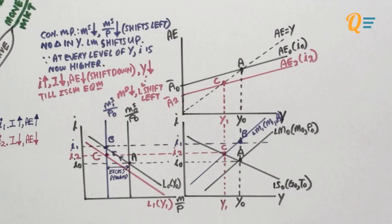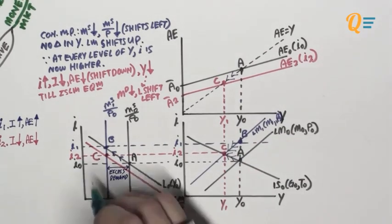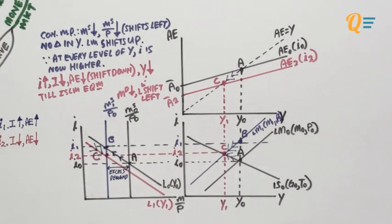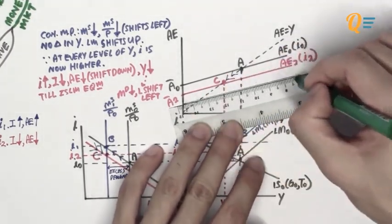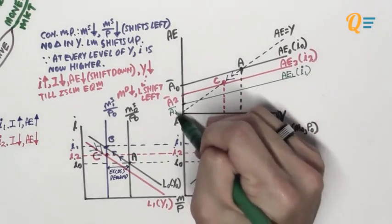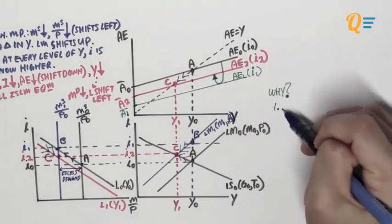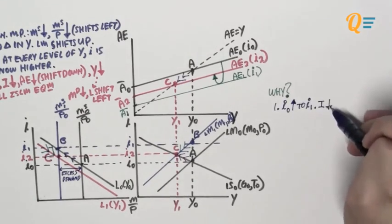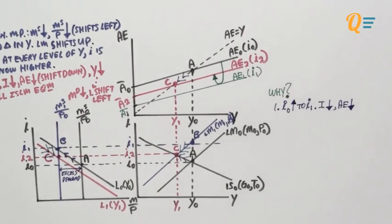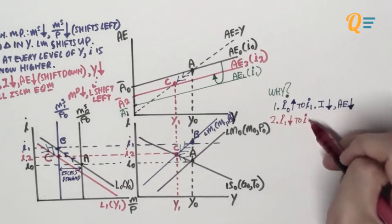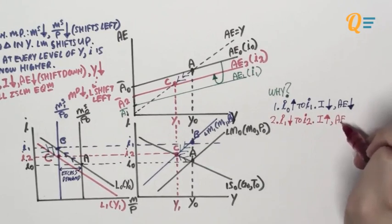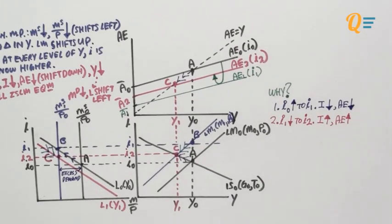Going back to the ISLM model, there is movement along the IS curve from point A to point C due to investment falling. Along the LM curve, there is movement from point B to point C as the money market clears and interest rates fall from I1 to I2. AE1 corresponds to interest rate I1: the AE curve first shifted down as rates rose from I0 to I1 reducing investment, then shifted up as rates fell from I1 to I2 — explaining the down-then-immediately-up movement of the AE curve.